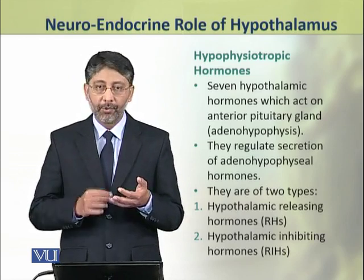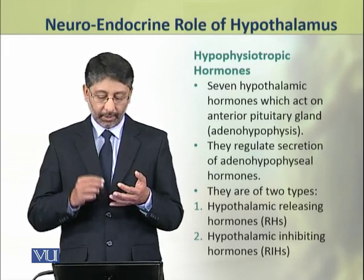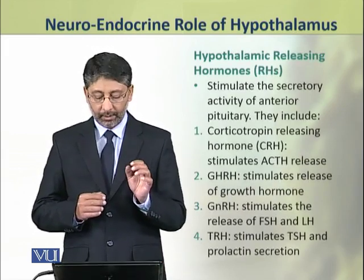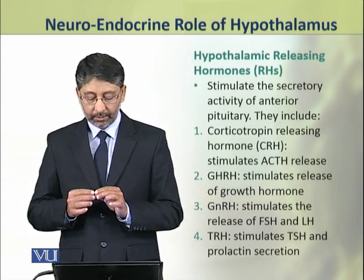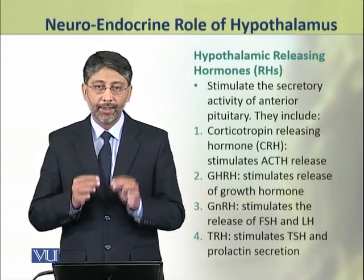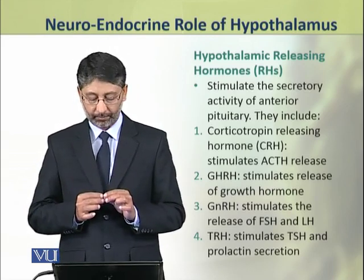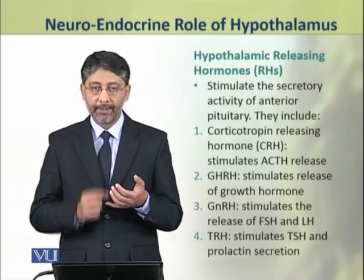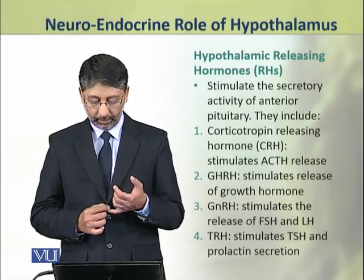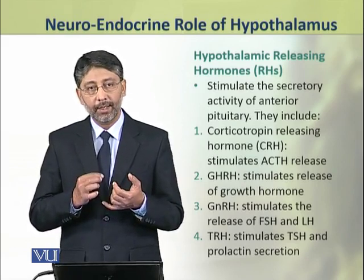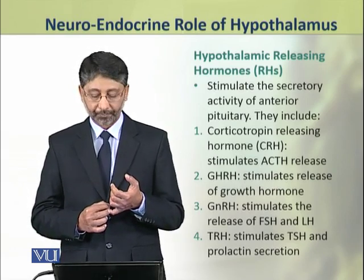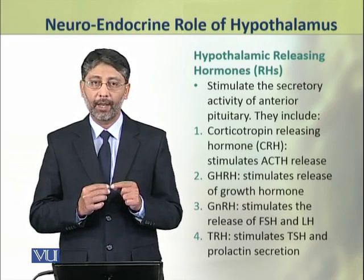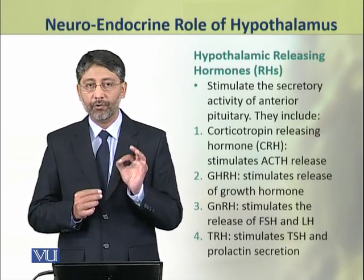First, the hypothalamic releasing hormones, and number two, the hypothalamic inhibiting hormones. The releasing hormones of hypothalamus stimulate the secretory activity of anterior pituitary. These hormones include: number one, the corticotropin releasing hormone or CRH, that stimulates the ACTH release from anterior pituitary. The second hormone is the growth hormone releasing hormone GHRH, which stimulates the release of growth hormone.